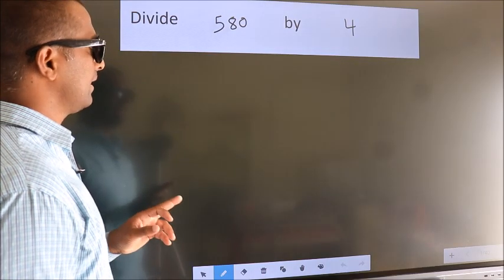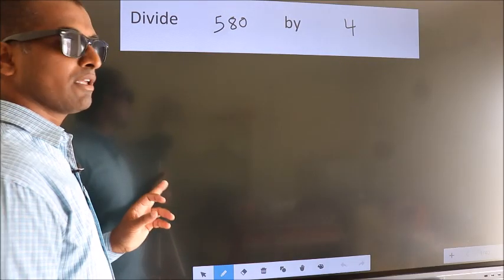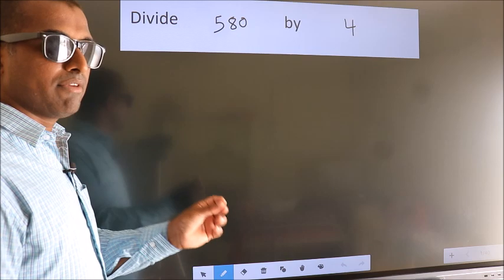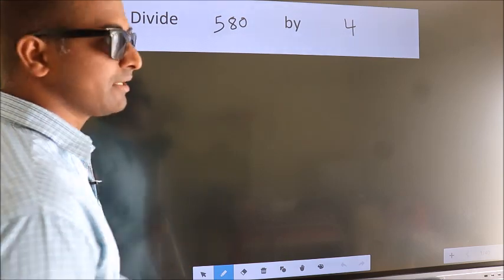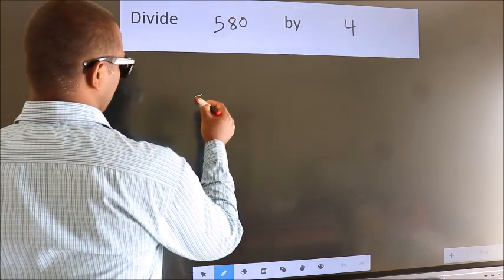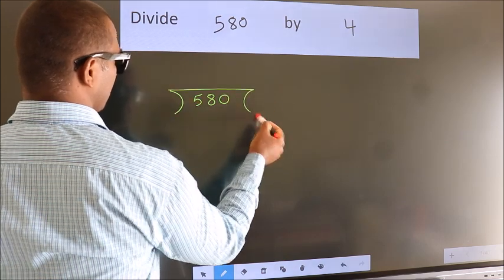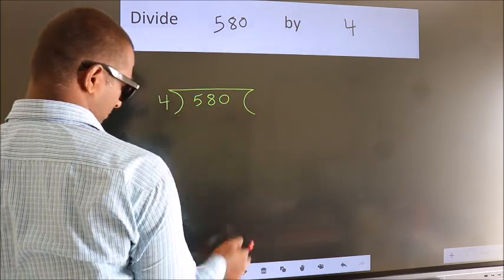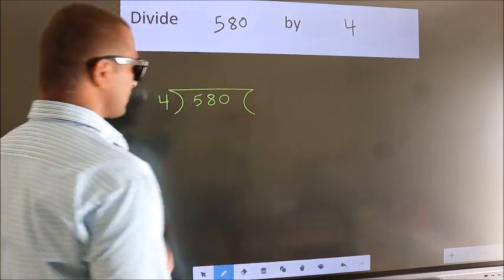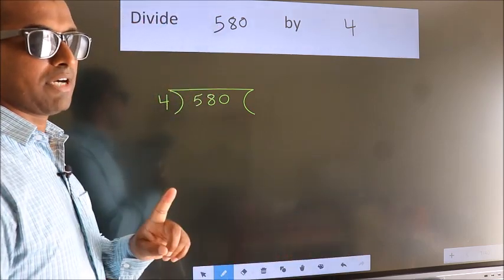Divide 580 by 4. To do this division, we should frame it in this way. 580 here, 4 here. This is your step 1.